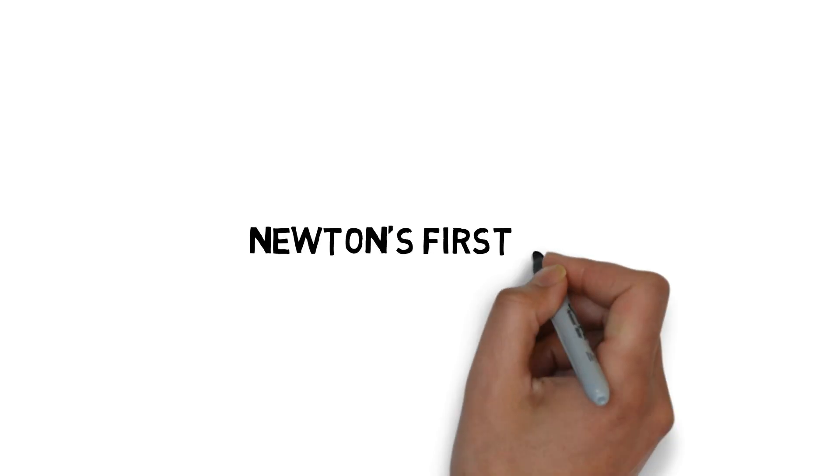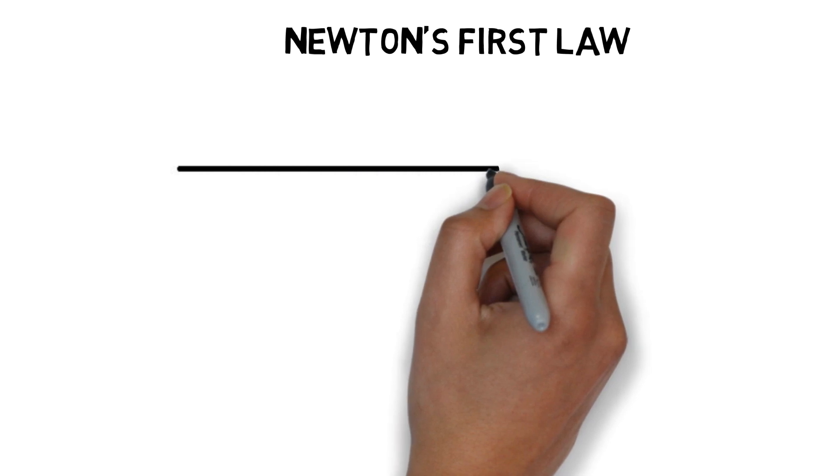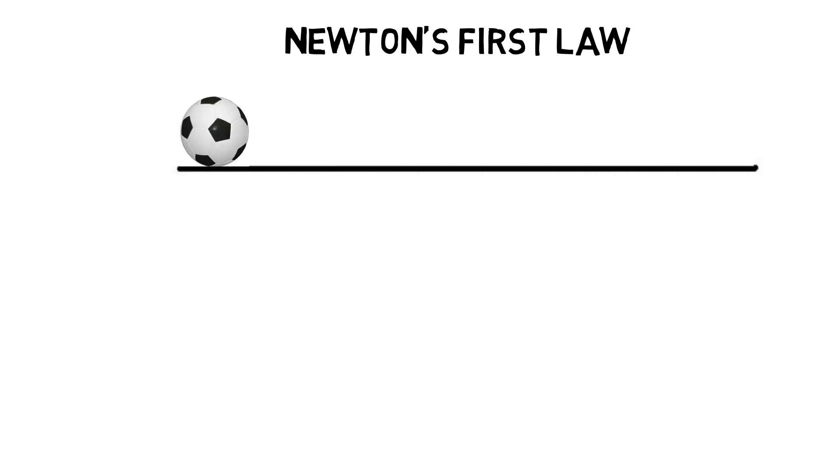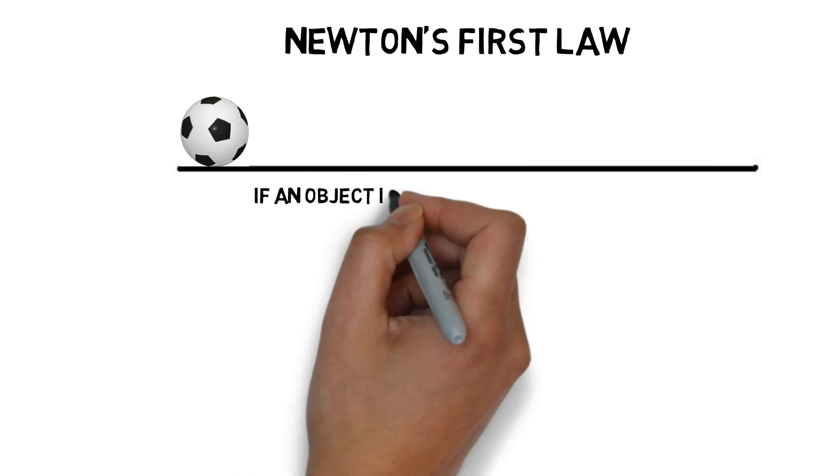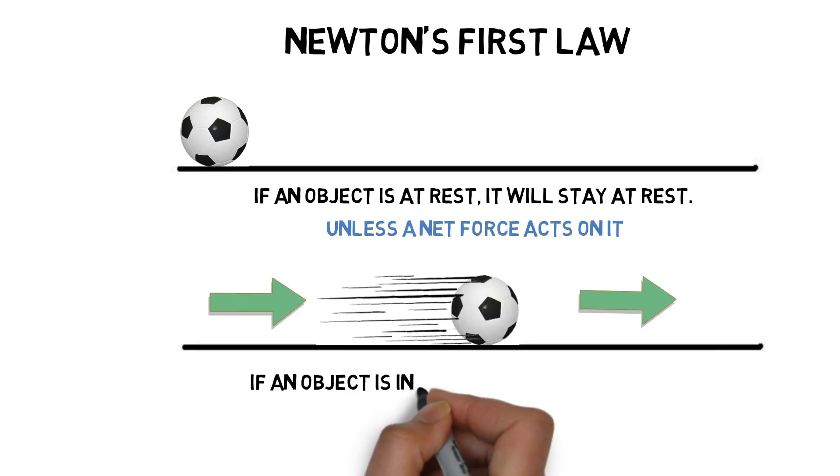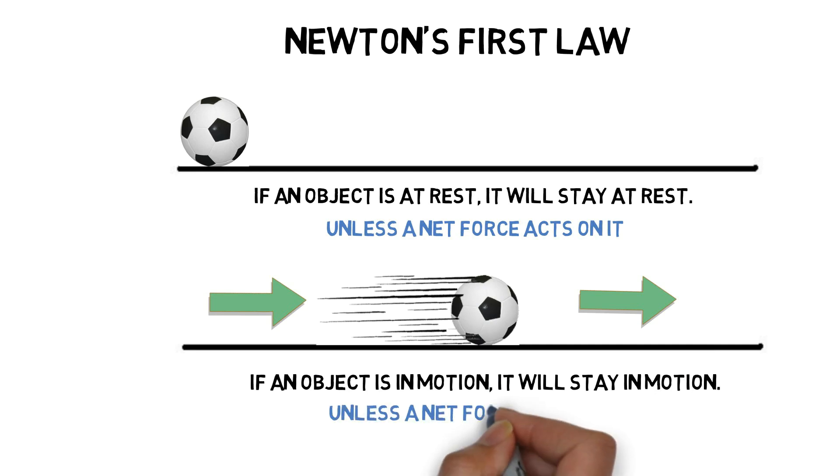First law of motion says every object in a state of uniform motion tends to remain in that state of motion unless an external force is applied to it. That means if an object is at rest, it will stay at rest unless a net force acts on it. If an object is in motion, it will stay in motion unless a net force acts on it.